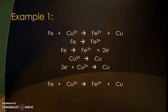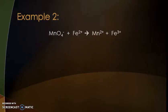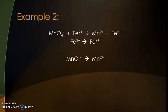Let's have a look at a harder example. Here we have permanganate and iron 2+ forming the Mn2+ and Fe3+ ions. First thing again: split it into two half equations. We'll look at the easier one first — anytime you see just Fe turning into Fe something, that's a nice easy one to do first.